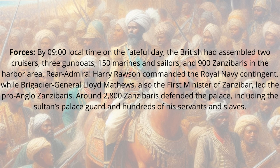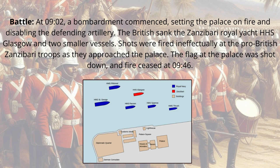By 9 o'clock local time on the fateful day, the British had assembled two cruisers, three gunboats, 150 marines and sailors, and 900 Zanzibaras in the harbour area. Rear Admiral Harry Rawson commanded the Royal Navy contingent, while Brigadier General Lloyd Matthews, also the First Minister of Zanzibar, led the pro-Anglo Zanzibaras. Around 2,800 Zanzibaras defended the palace, including the Sultan's palace guard and hundreds of his servants and slaves.